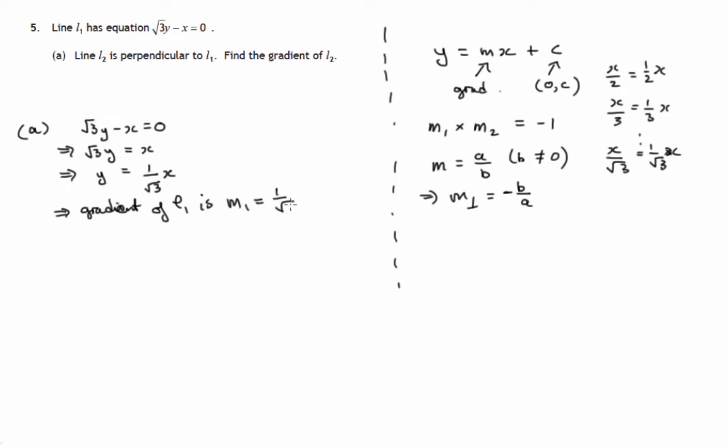But the gradient, the gradient of L1 is, let's call it m1, and it's 1 over root 3. And that would imply that the perpendicular gradient would be negative root 3 over 1. We can forget about the 1, but we've inverted it and changed the sign as we mentioned over here. So that's the gradient of a perpendicular line. So that is the gradient of L2.